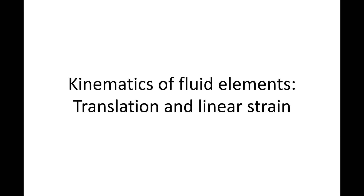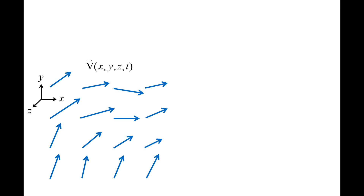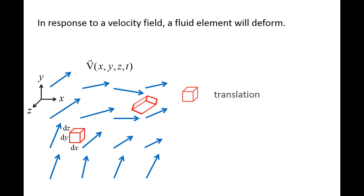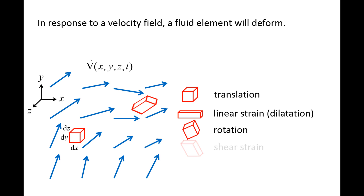In this lesson, we will discuss the translation and linear strain of fluid elements. Here we have a velocity field that varies in time and space. If we place a fluid element of size dx, dy, dz into this velocity field, the fluid element will move and deform. We can separate the overall motion of the fluid element into four types of motion: translation, linear strain (also called dilatation), solid body rotation, and shear strain.